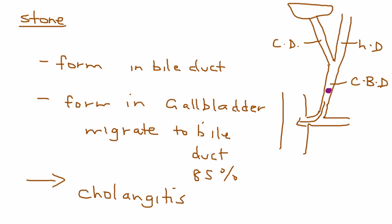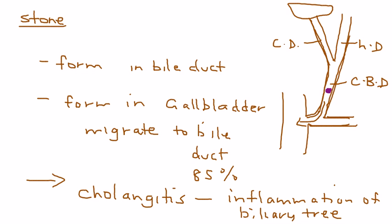So what's cholangitis? Well, by definition, it's the inflammation of the biliary tree. Now what's a biliary tree? The biliary tree is just the name given to this whole area of these ducts. It kind of looks like the branches of a tree - that's why it's called that.